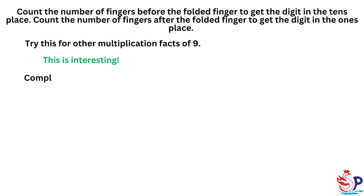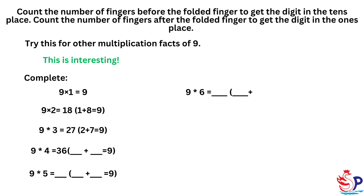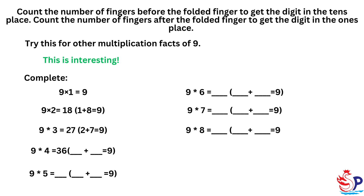This is interesting — complete: 9×1=9; 9×2=18, 1+8=9; 9×3=27, 2+7=9; 9×4=36, 3+6=9; 9×5=, plus=9; 9×6=, plus=9; 9×7=, plus=9; 9×8=, plus=9; 9×9=, plus=9; 9×10=, plus=9.